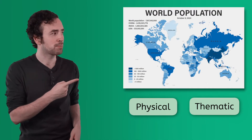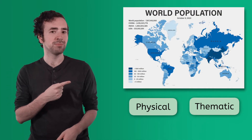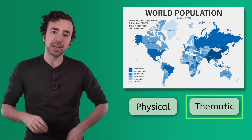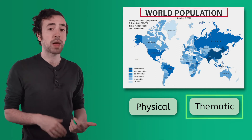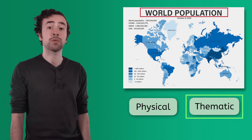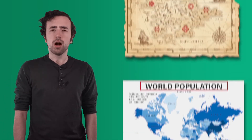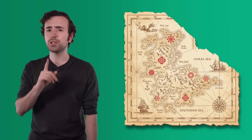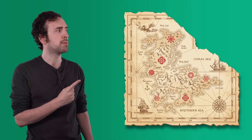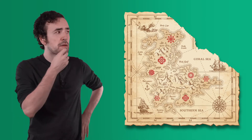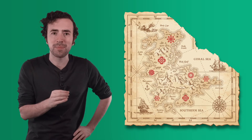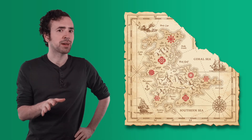How about this one? Yep, this one is thematic. It shows the population, or how many people live, in every country around the world. So which type of map do you think mine is? It does have symbols on it, so maybe it's a thematic map. We should keep digging.